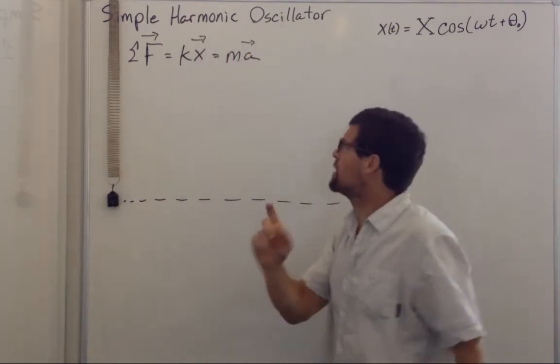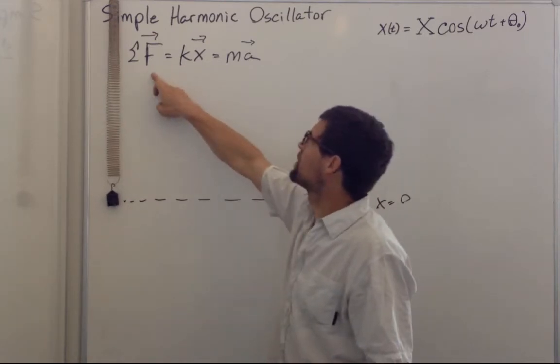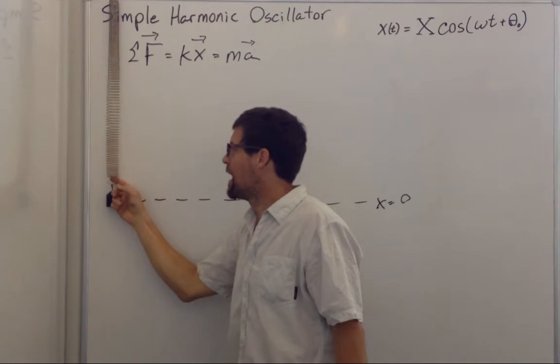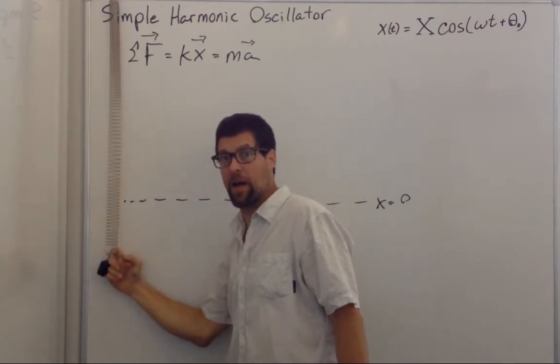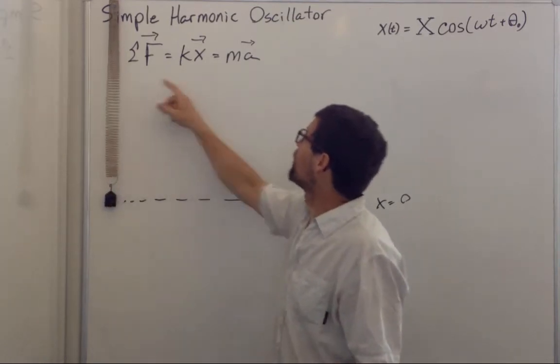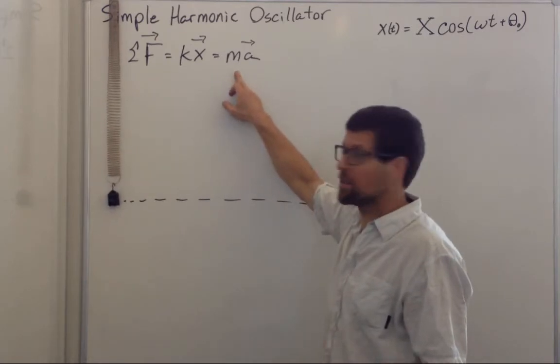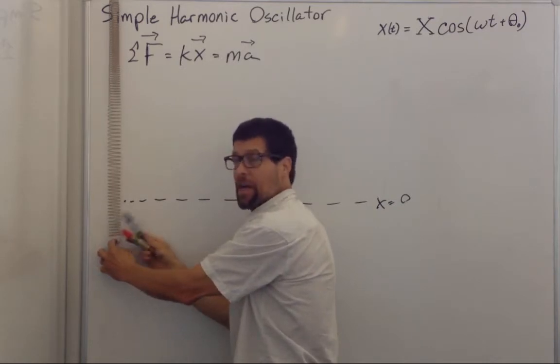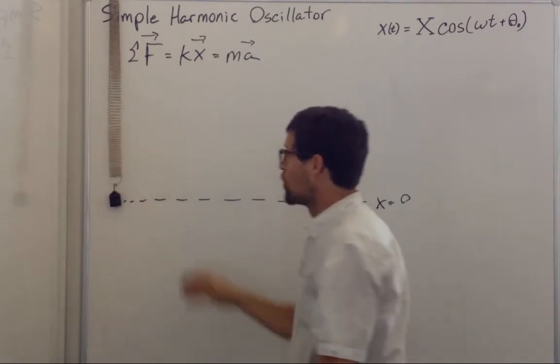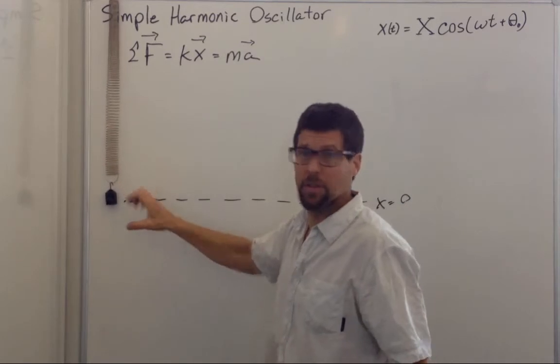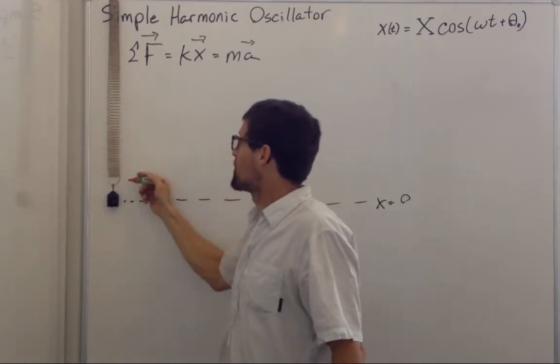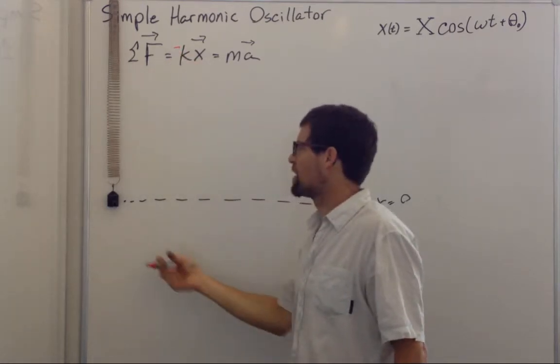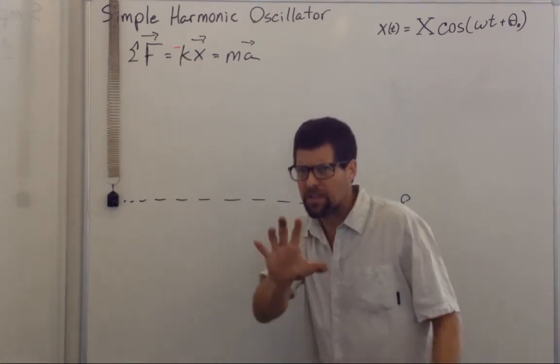Now there's a very important addition I must make because force equals kx refers to the force on the spring. If I move this down, I need to pull down on it. But we're looking at the force on the mass. The mass pulls down on the spring in order to elongate it. But the spring here is pulling up on the mass. And so these are equal and opposite forces. So the force that the spring puts on the mass is exactly the opposite of the force that the mass puts on the spring.